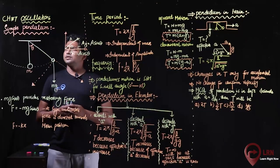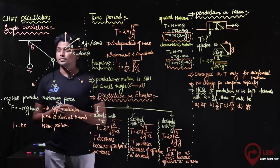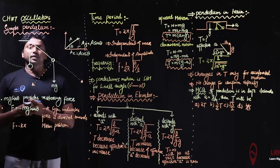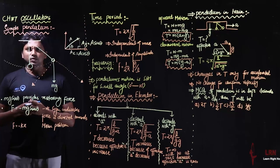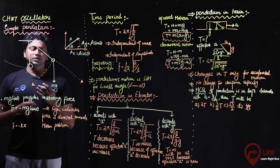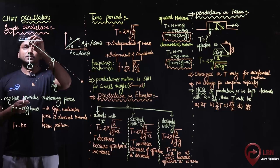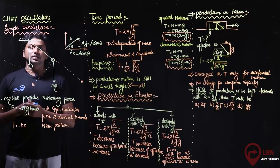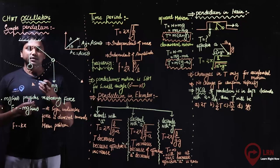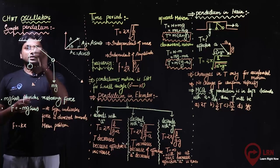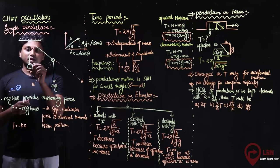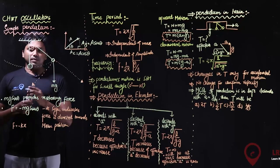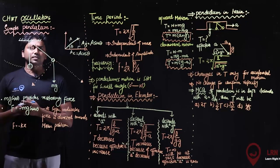Bismillahirrahmanirrahim. Now we have chapter 7 and the topic is Simple Pendulum. First, we will talk about the construction of the Simple Pendulum. We need a rigid support, and then we need a string which we have attached to this rigid support. At the end of the string, we attach a bob which we call M. So this pendulum is made.